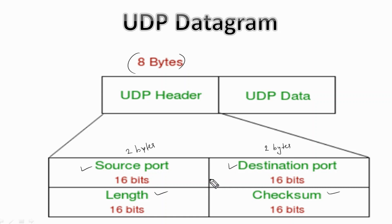The length field represents the length of UDP including the header and the data, and it is a 16-bit field. Then we have the checksum, which is a 2-byte long field, and it is 16 bits.